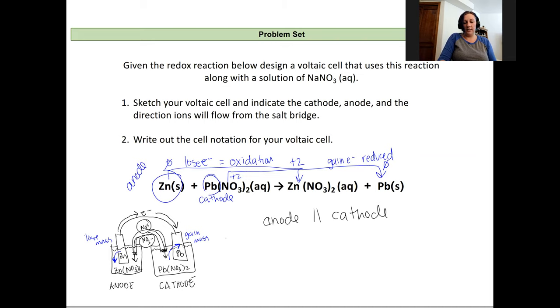And then we have our electrode. So let's start on the anode side. Our actual electrode is that zinc metal. Our electrolyte is zinc plus two. It's aqueous.